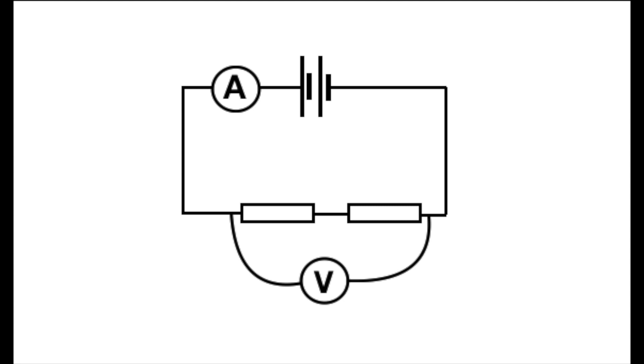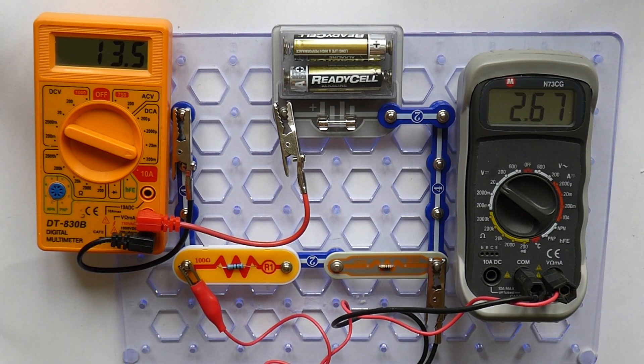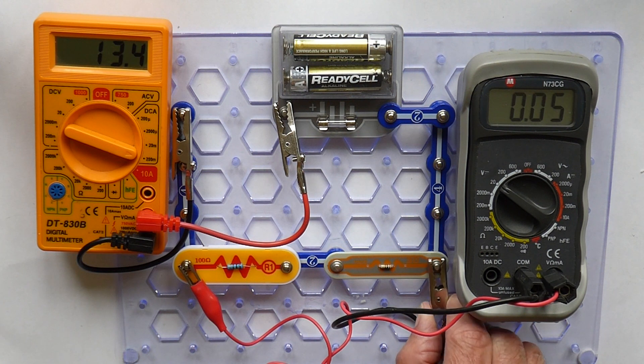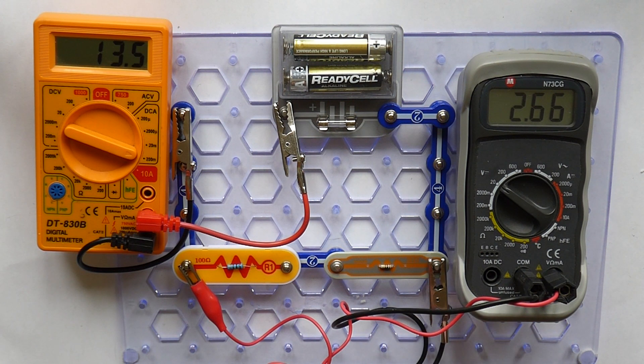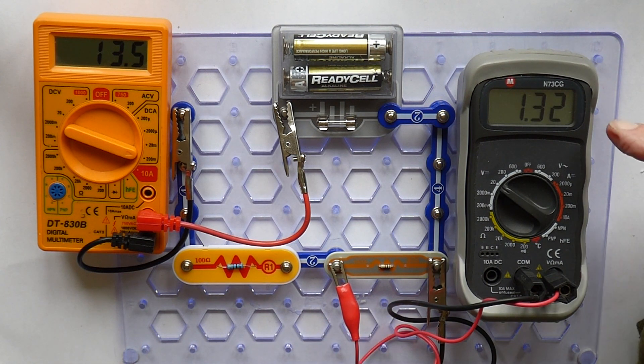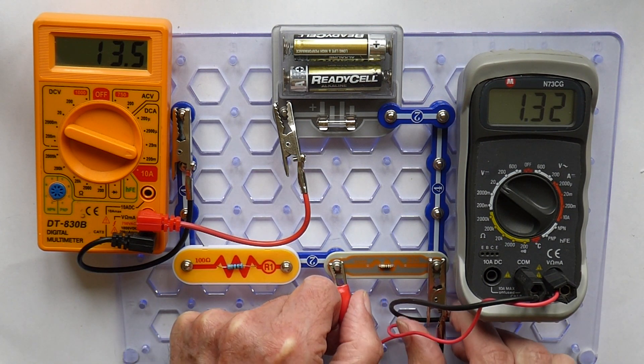I'm going to use a voltmeter to measure the potential difference across each of the resistors. The ammeter is in the circuit simply to show that there is a current flowing. The value is unimportant here. As you can see, the potential difference across both resistors is 2.66 volts.